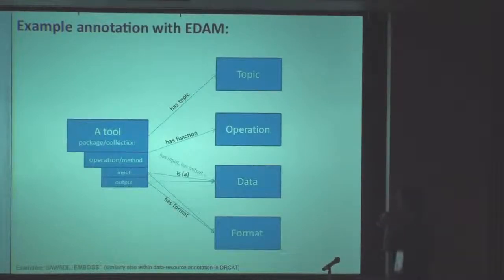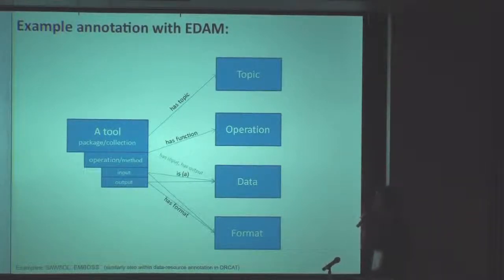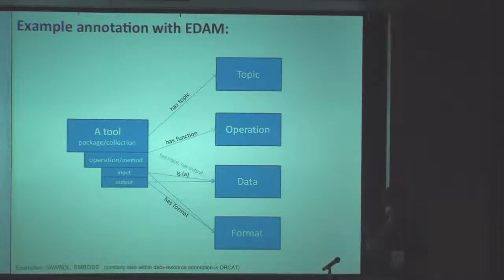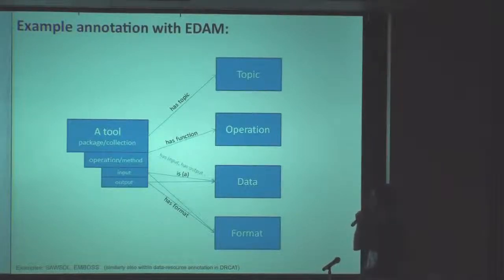This is how an example annotation with EDAM may look, in the case of annotating a tool or a package. The tool or a collection of tools may have a topic, such as systems biology. The tool or its operations may have a function, for which you can use a term or concept from EDAM's operations sub-ontology. Then there are inputs and outputs, which are types of data, and those inputs and outputs have a format, which is also a concept from EDAM.